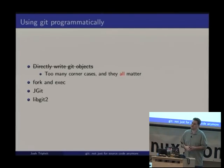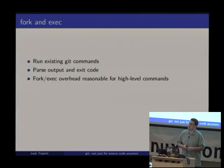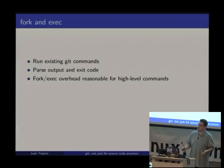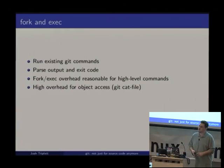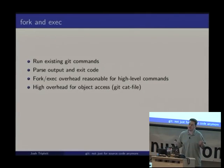The three alternatives that do make sense programmatically are: fork and exec Git, use JGit (a Java reimplementation), or use libgit2 (a C implementation). Fork and exec is the most straightforward — run existing Git commands, parse their output and exit code. The overhead is not that bad for high-level commands like clone, push, pull, or checkout, since those operations are network- or disk-bound. Where it gets annoying is accessing individual objects — recursing through trees by running git cat-file with fork and exec is painful. Error handling is also hard: you end up parsing human-readable messages like 'you are in detached head state.'